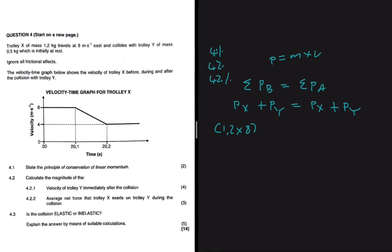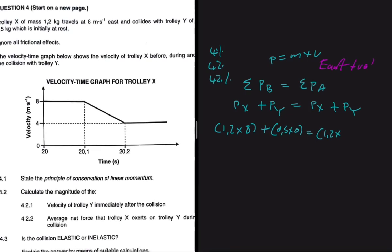We need to decide on a direction convention: let's take east as positive. Trolley Y is initially at rest, so its momentum is 0.5 multiplied by 0. After the collision, trolley X has momentum 1.2 multiplied by its new velocity — which we read from the graph as 4 m/s — plus 0.5 multiplied by the velocity of trolley Y.